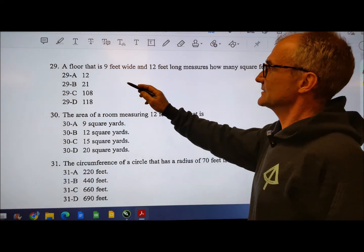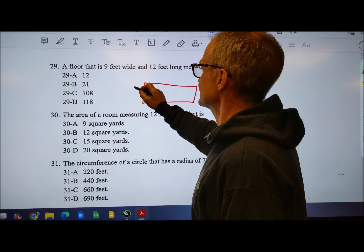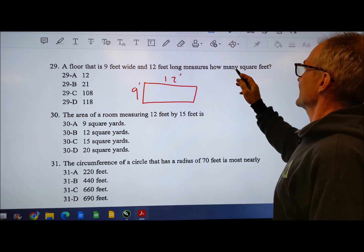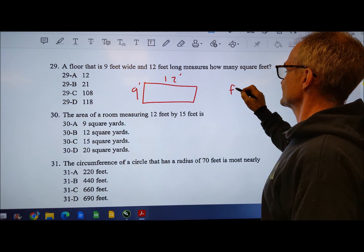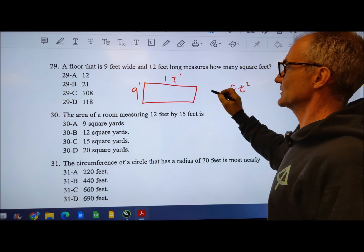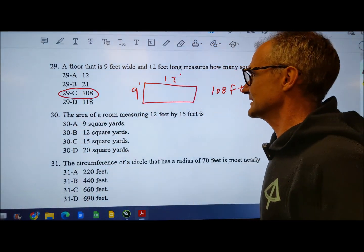Number 29, a floor that is nine feet by 12 feet. So it's nine feet by 12 feet. How many square feet? So I have feet times feet. That's going to give me square feet. And then nine times 12 is 108. So it's 108 square feet. Answer C for 29.